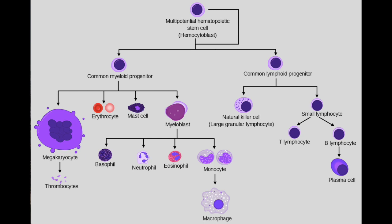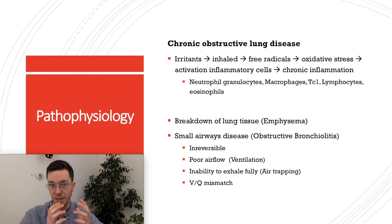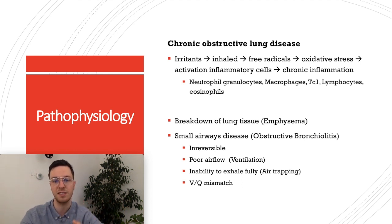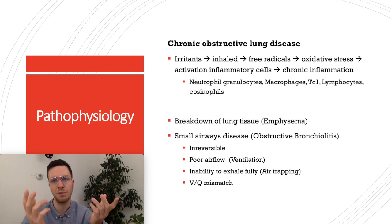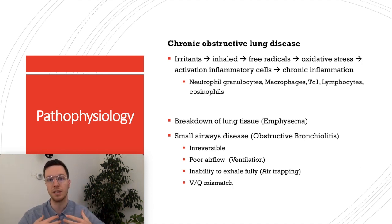In this process, almost all your immune cells are involved: neutrophil granulocytes, macrophages, TC1 cells, lymphocytes, and even eosinophils. The chronic inflammation leads to two things: breakdown of your lung tissue — this is emphysema — and inflammation of your small airways — this is obstructive bronchiolitis. Those two components together cause irreversible damage to your lungs, leading to air trapping, poor ventilation due to obstruction, and VQ mismatch.